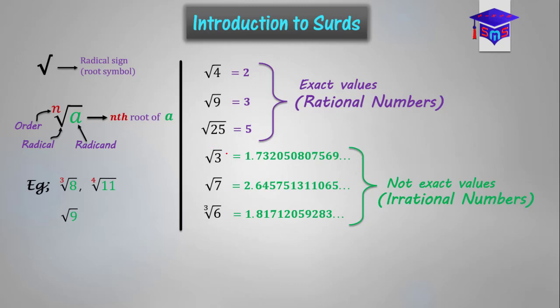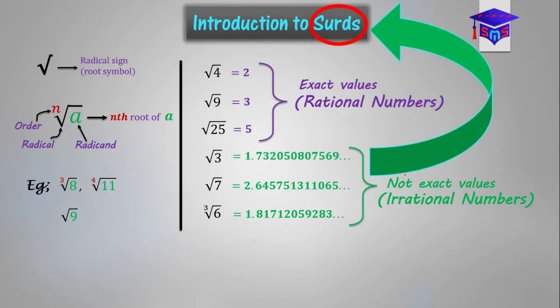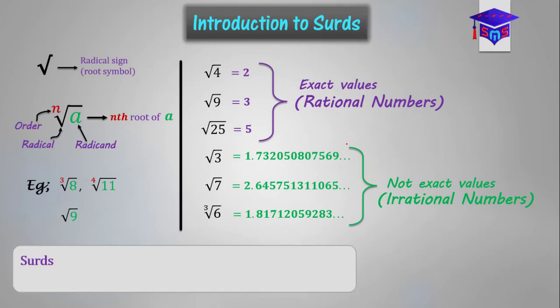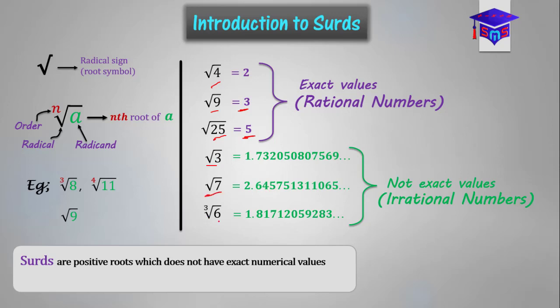Numbers in this category are what we generally refer to as surds — roots that cannot be simplified to get an exact value or reduced to a whole number. Surds are positive roots which do not have exact numerical values. Root 4 gives you an exact value, root 9 and root 25 simplify to exact values, but root 3 does not give you an exact value, so it's a surd. Root 7 does not give you an exact value — it's also a surd.